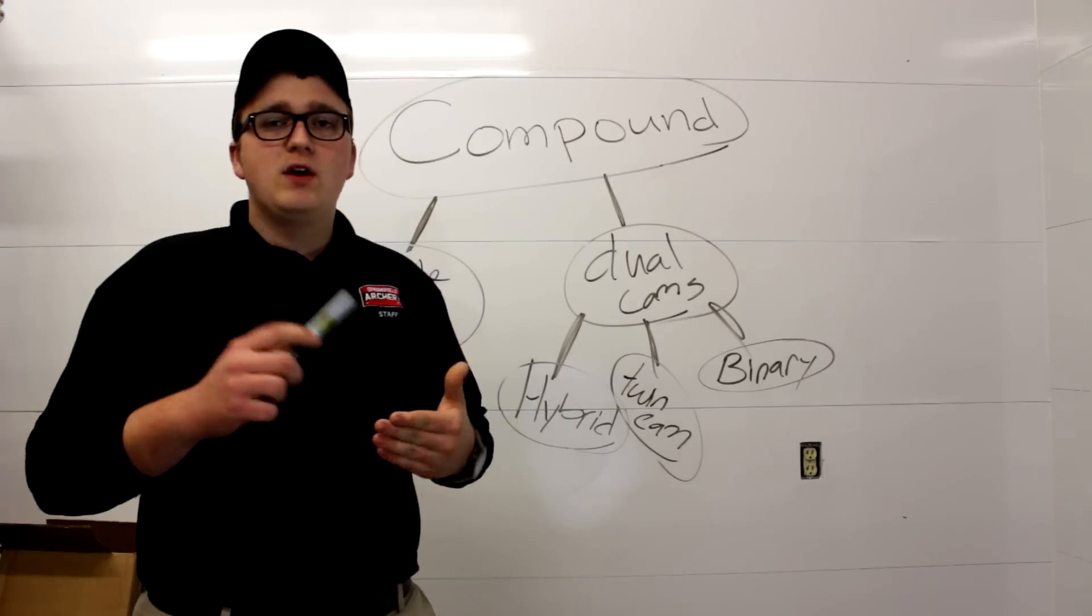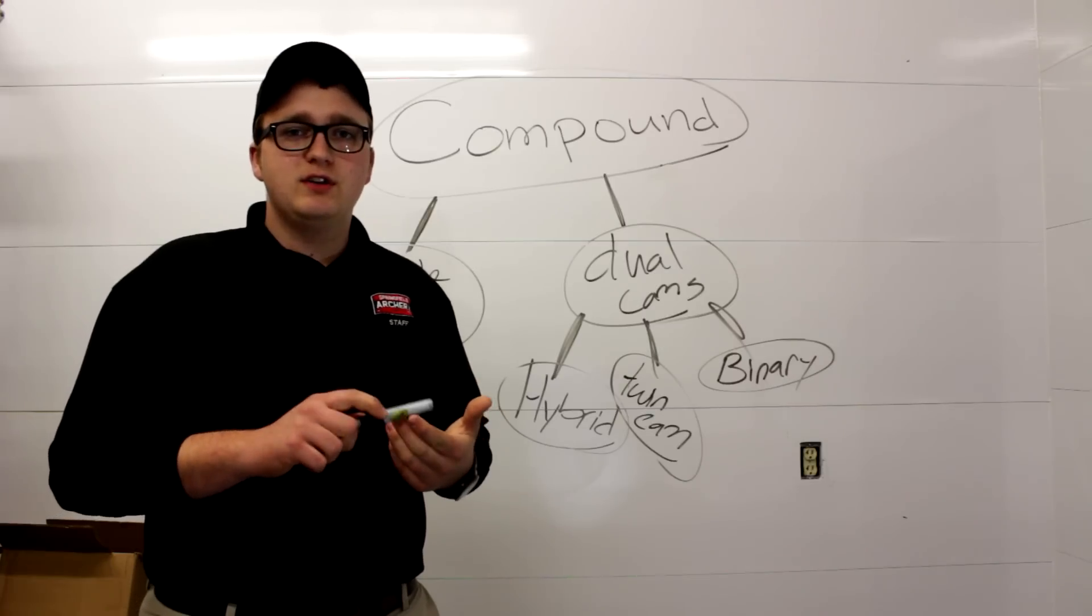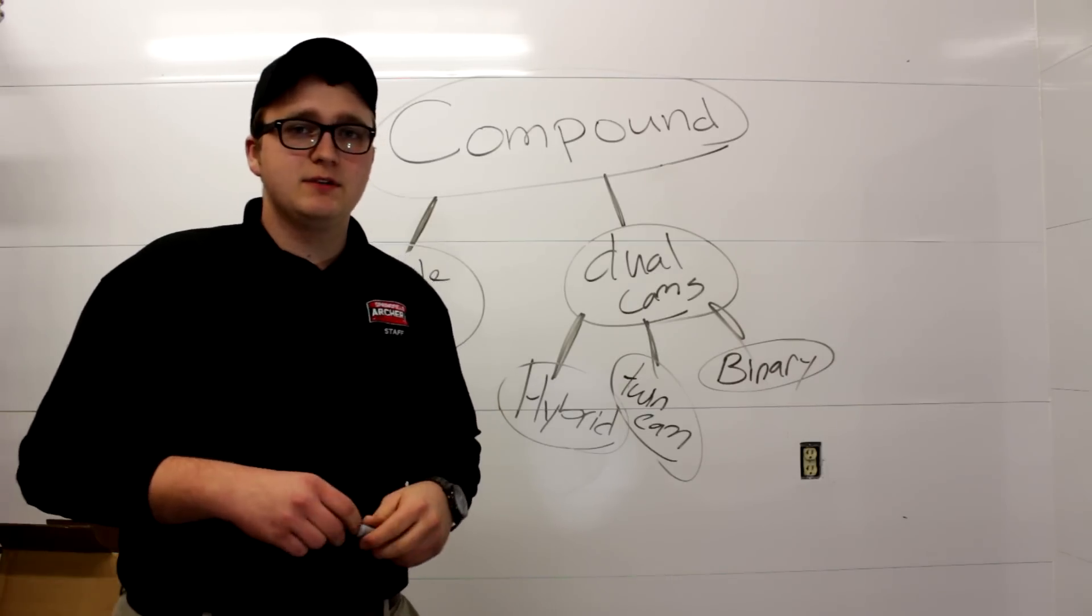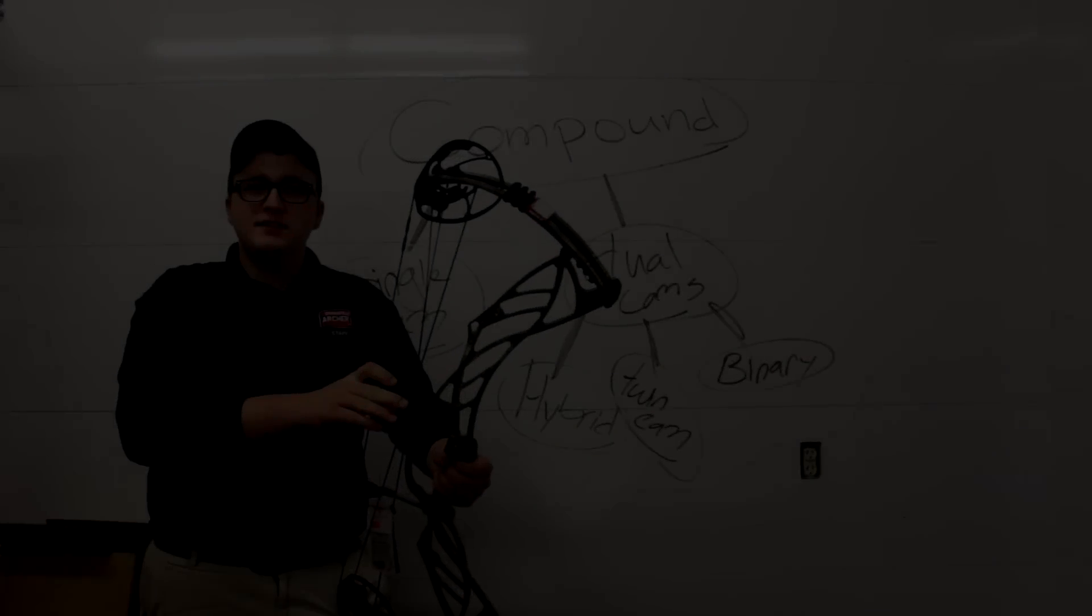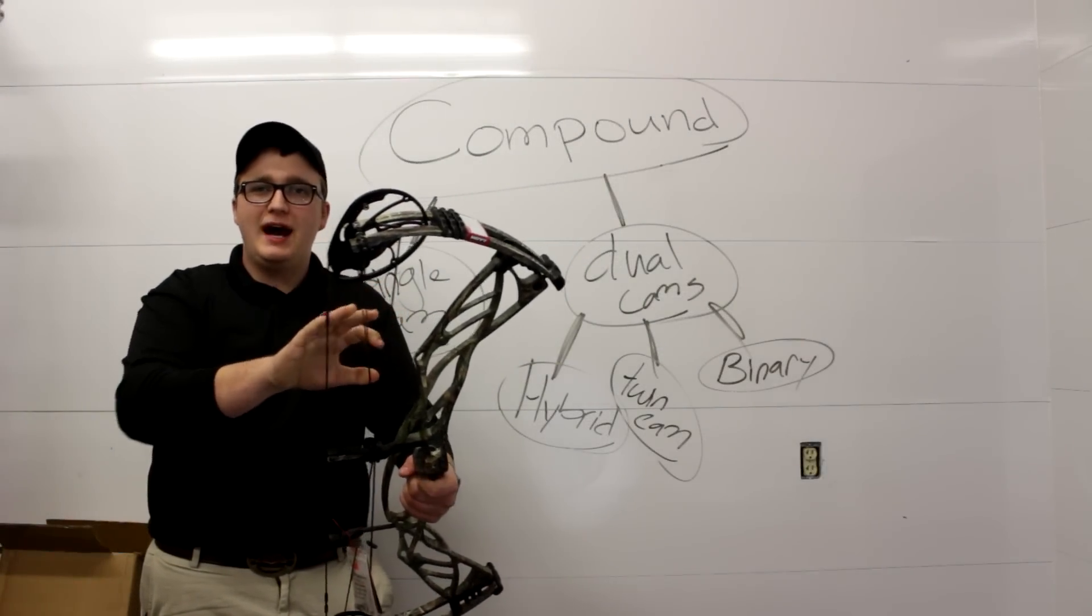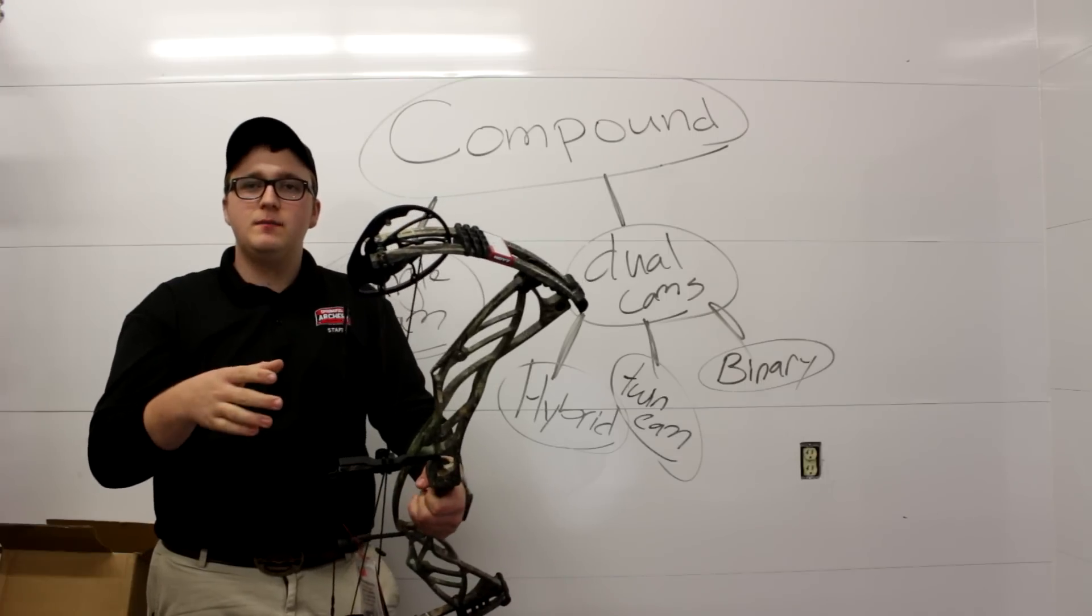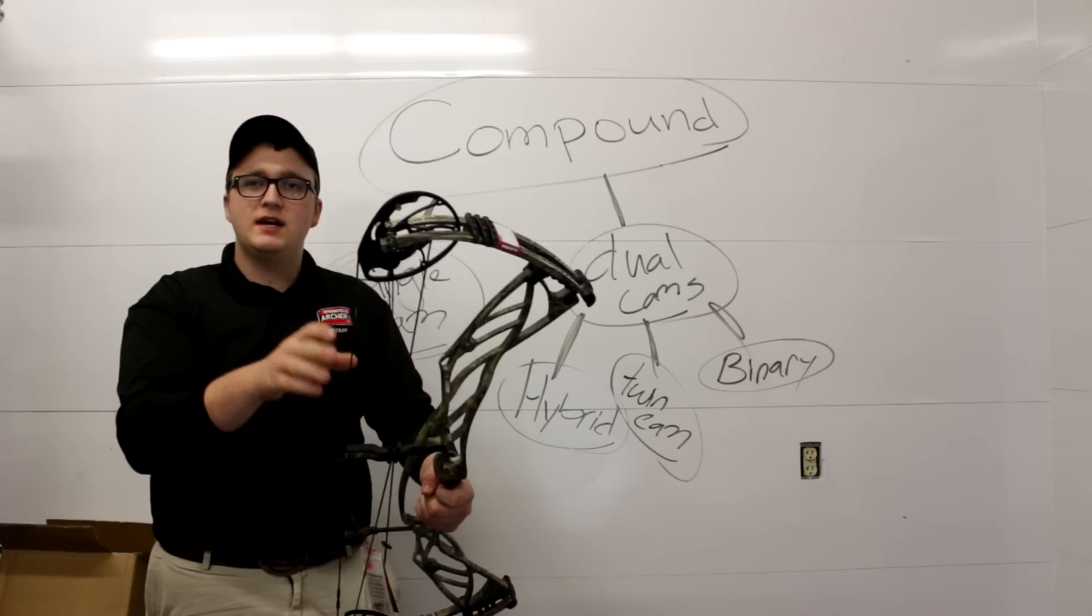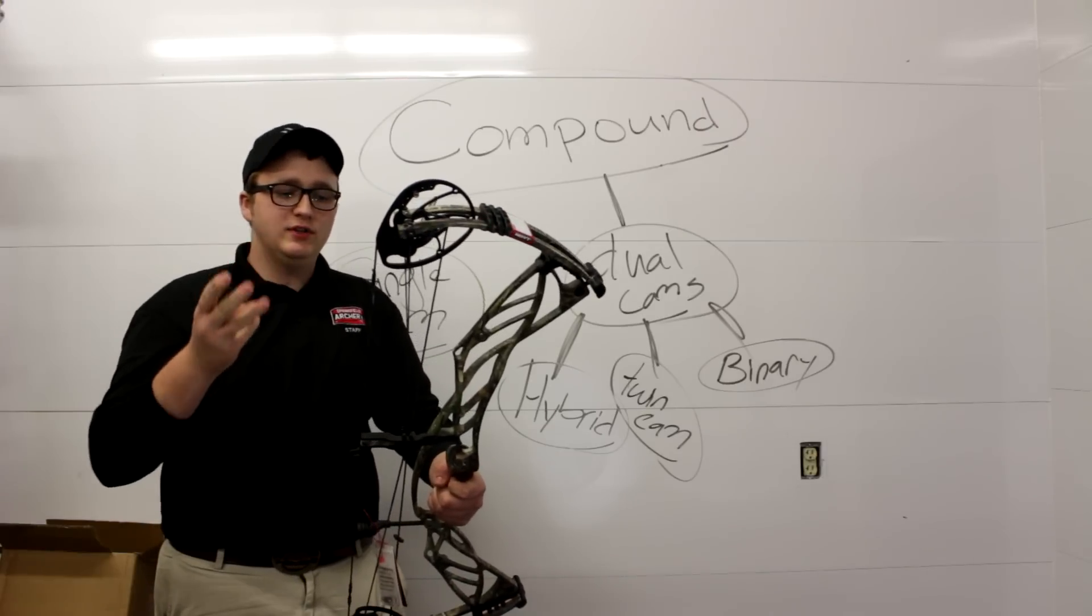Now that we've got that figured out I'm gonna go over a couple differences as far as strings and cables go because that's super important in the different styles of cams. So I've got the 2016 Hoyt Defiant here with me. I went ahead and chose this bow because this particular bow is a hybrid cam system. I'm gonna get in more to that here in just a second. But I chose a hybrid cam system because it utilizes all three types of strings I'm going to talk about here.